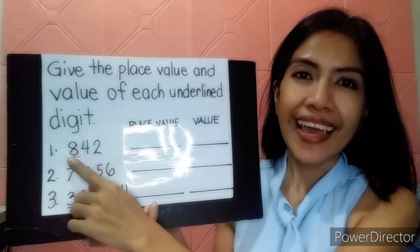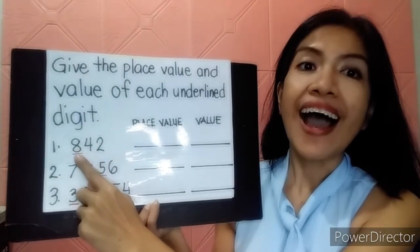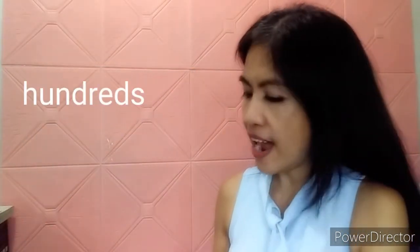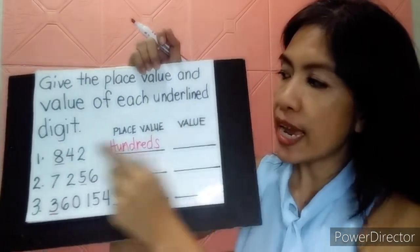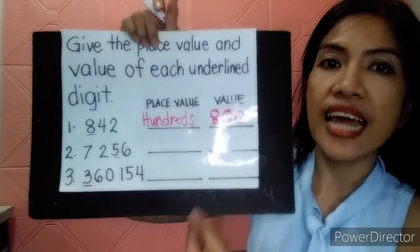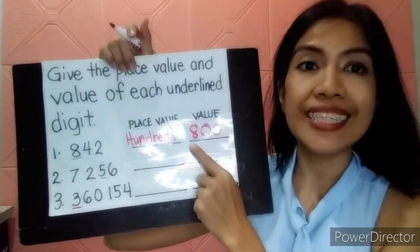The underlined digit here is eight. So you count: ones, tens, and hundreds. You write 'hundreds.' For the value, copy the eight and change the four and the two into zeros. So the underlined digit is in the hundreds place value and the value is 800.